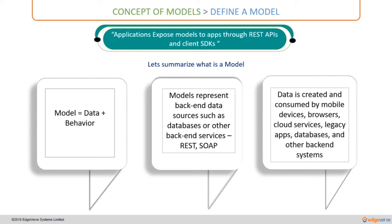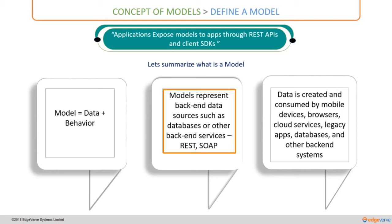To summarize, a model is a combination of data and behavior. By data, we mean the core set of properties a model is comprised of, and the behavior represents the REST and other APIs that it supports. Models represent the backend data sources such as databases or other backend services, which are exposed in the form of REST and SOAP services. The data is created and consumed by various applications running on mobile devices, browsers, cloud services, legacy apps, and more.